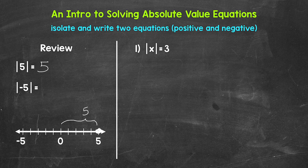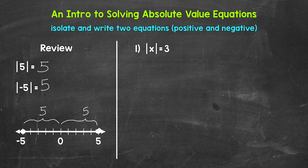The absolute value of negative five is five as well. Taking a look at the number line, here's negative five — the distance from zero is also five units. Keep in mind, the absolute value of a negative is always going to be positive. It's the distance from zero. So the absolute value of positive five and negative five is five.